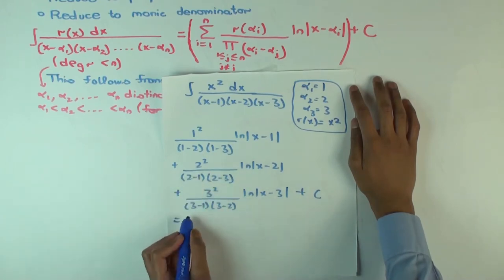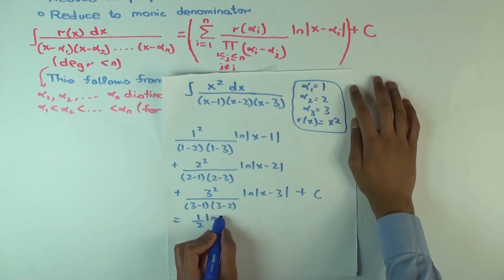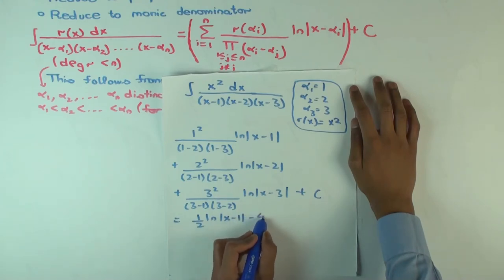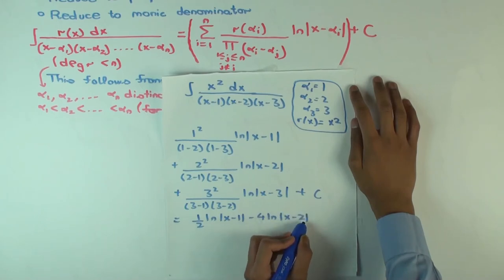And what does this become? Simplify this. So it becomes 1 half minus 4, plus 9 over 2.